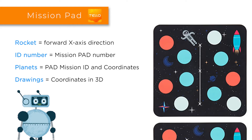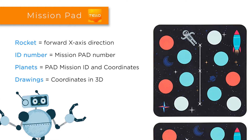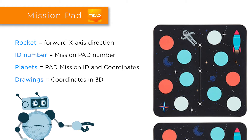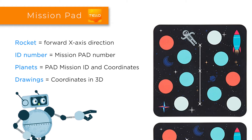The planets represent different figures that indicate the ID number and coordinates that the Tello can recognize. The drawings on each mission pad represent the coordinates in 3D, with the origin at the center of the mission pad, which represents the x and y plane.